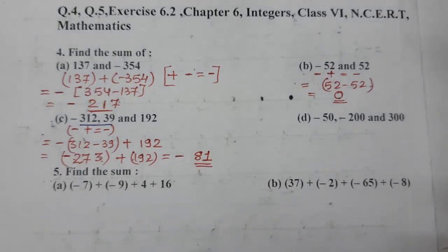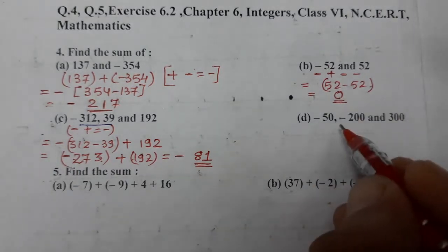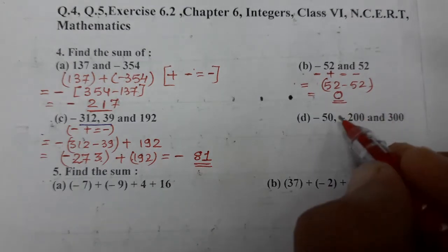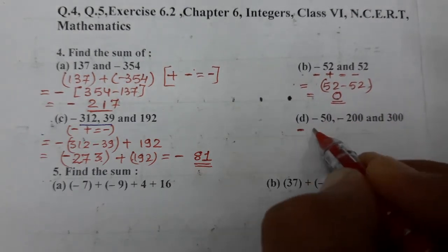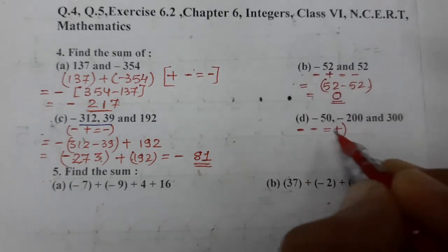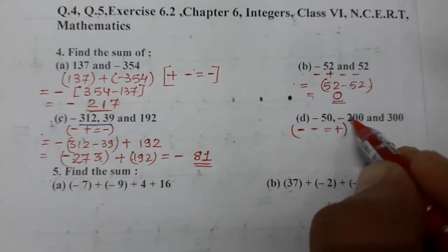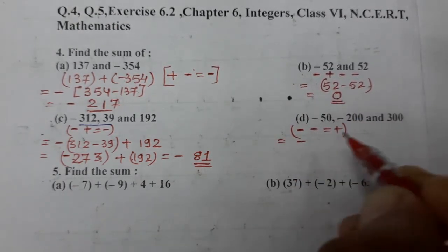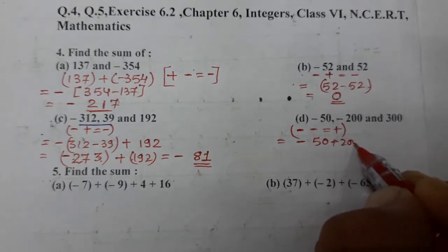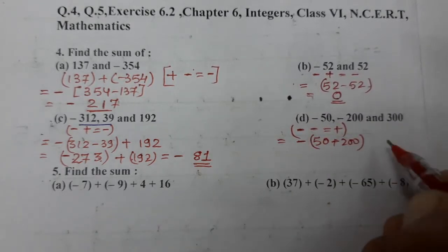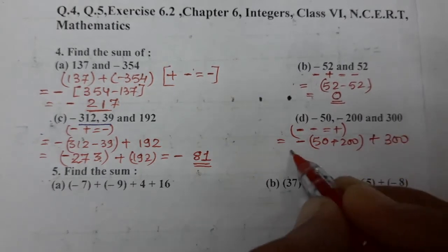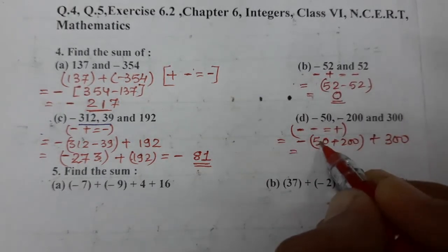Now the next one: (-50) + (-200). Dono minus hain, to minus minus kya hota hai — plus hota hai. Sign negative ka lagta hai. So minus minus = plus, and the sign is negative. 50 plus 200 = 250, so minus 250 chal raha hai hamara.